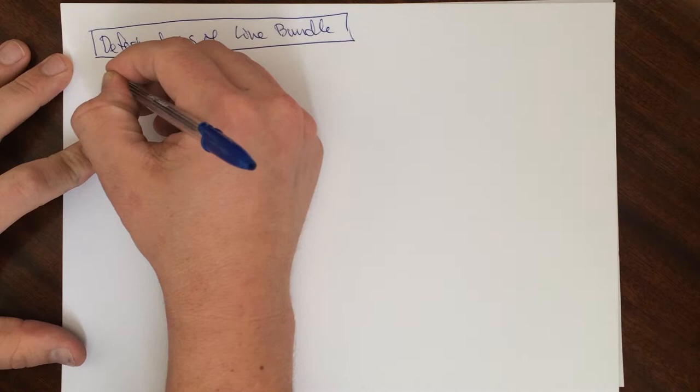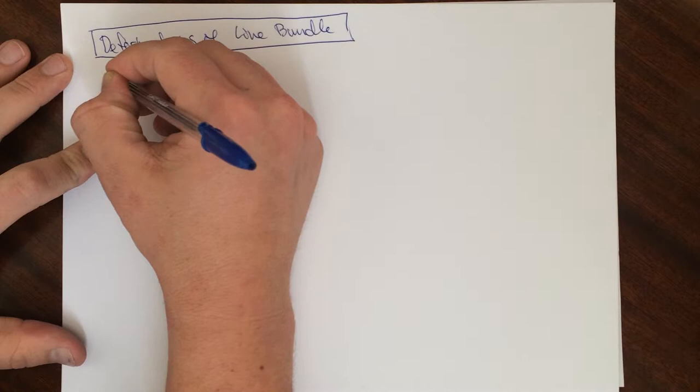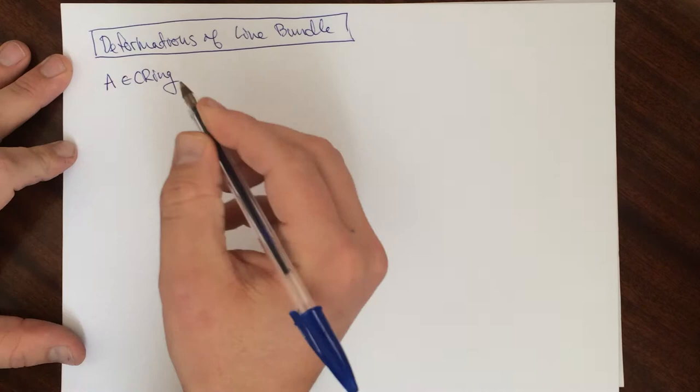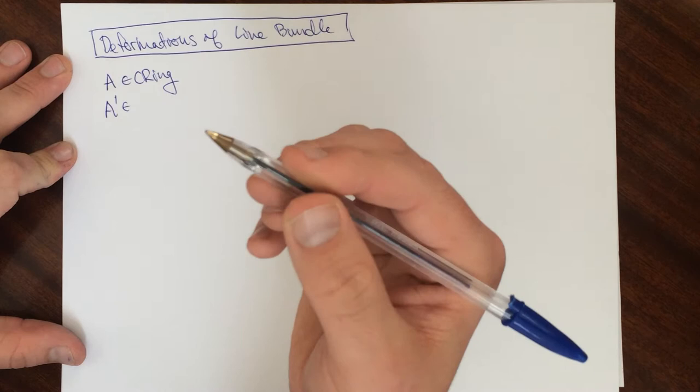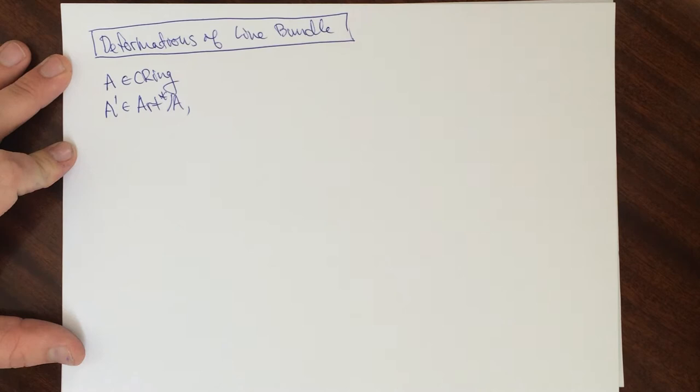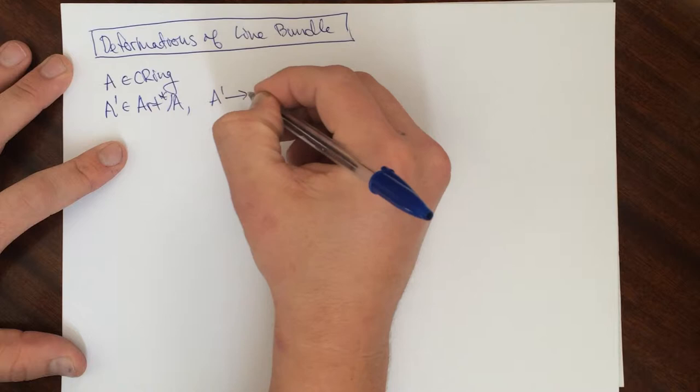So here's the setup. We're going to take A to be a ring, a commutative ring. We're going to take A prime to be a square zero extension of A. So here we're going to take A, the surjective map like this where the kernel squared is going to be equal to zero.